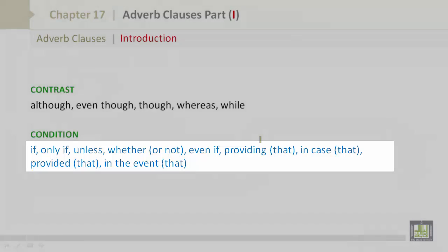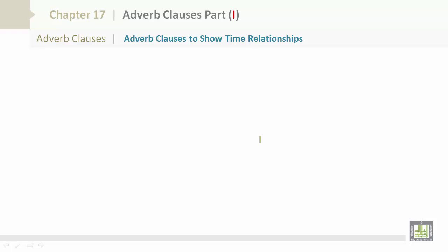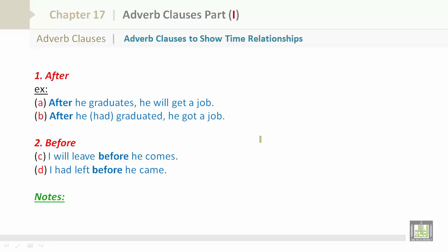Adverb clauses to show time relationships. Number one is 'after.' For example: A) 'After he graduates, he will get a job.' B) 'After he had graduated, he got a job.' A is the present tense and B is the past tense. Number two, 'before': C) 'I will leave before he comes.' D) 'I had left before he came.' A and C are present tense; B and D are past tense. Please note that present tense, not future tense, is used in an adverb clause of time.